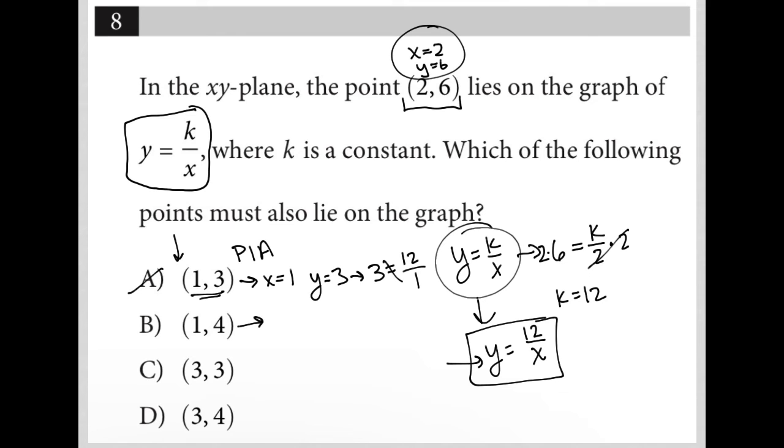How about choice B? In this case, x is 1 and y is 4. So let's plug that into our equation. y equals 12 over x becomes 4 equals 12 over 1. That's absolutely not true, so B is gone.